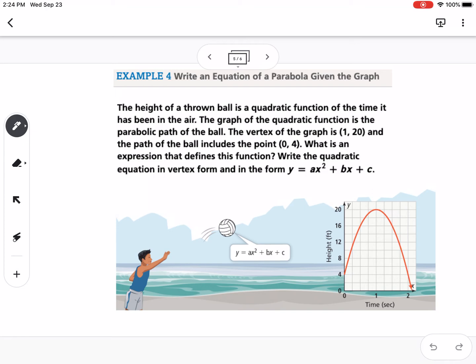Our last example says to write an equation of a parabola given the graph. The height of a thrown ball is a quadratic function of the time it has been in the air. The graph of the quadratic function is the parabolic path of the ball. The vertex of the graph is 1, 20, and the path of the ball includes the point 0, 4. What is an expression that defines the function? Write the quadratic equation in vertex form and in the form y = ax² + bx + c. I don't have enough room on this slide, but we can see here's our visual. We have a sketched graph, but we're going to talk about how to do this algebraically.